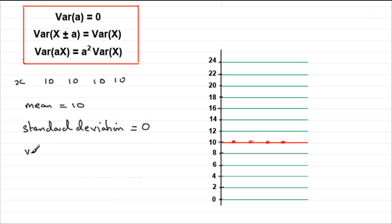And the variance is always the standard deviation squared. So if the standard deviation is 0, then clearly the variance is going to equal 0 squared, which is going to be 0. And this would be true for any constant value. So we've got that the variance of any constant would be equal to 0.